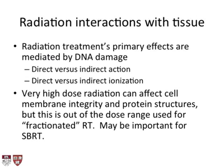Radiation interactions with tissue: the primary effects are mediated by DNA damage. At clinical doses, tissue damage is mostly mediated by DNA damage. There are some effects on cell membranes, but those become significant only at very high doses. Very high dose radiation can affect cell membrane integrity and protein structures — this might be important for SBRT or SRS, but is outside the dose range used for fractionated radiation.